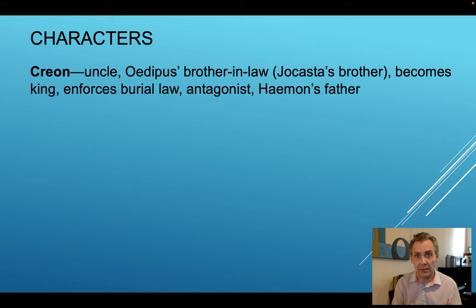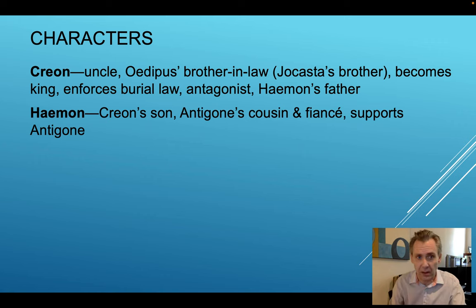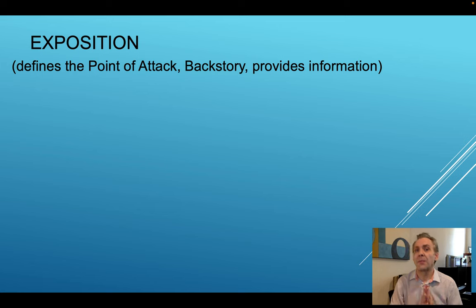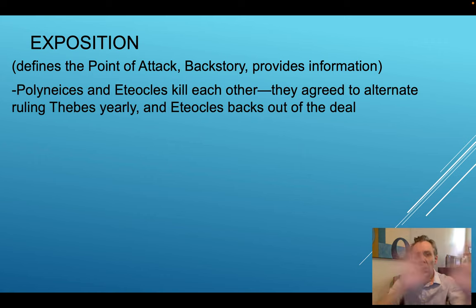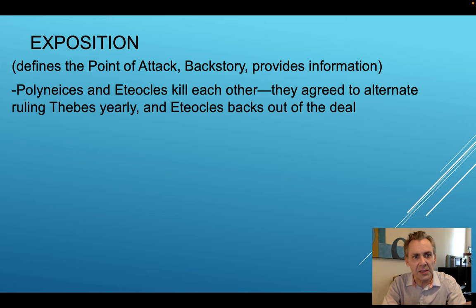Haman is Creon's son, Antigone's cousin and fiancé, and is a man who completely and fully supports Antigone — he is her number one backer. Eurydice is Creon's wife; by the end of the play she becomes devastated by Haman's death and kills herself. She's not in the story a lot. So, exposition: remember, exposition defines the point of attack, gives the backstory, and provides information.